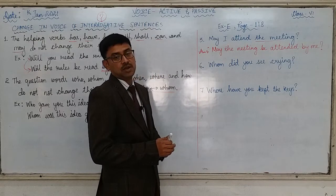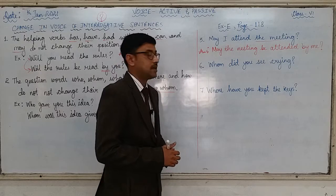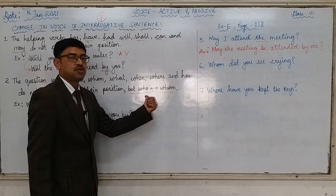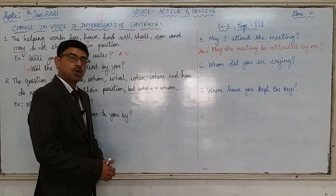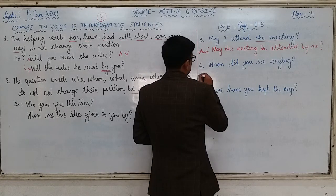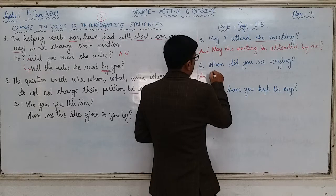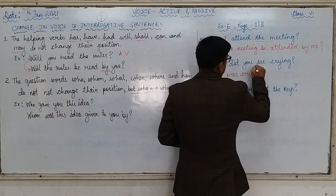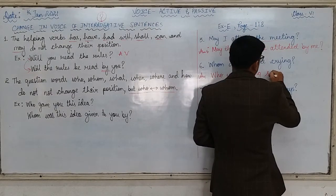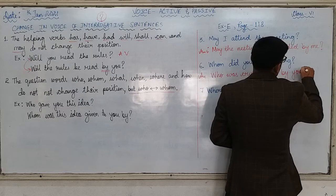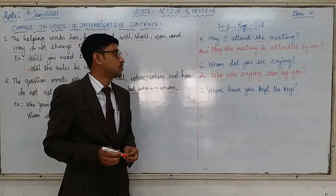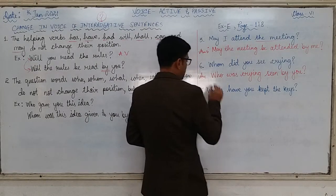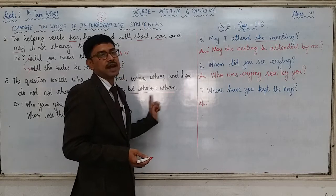Next question: 'Whom did you see crying?' We have just learned that if 'whom' is there, we have to change it to 'who', and if there is 'who', it has to be changed to 'whom'. So here 'whom' is present, and you will have to write: 'Who was seen crying by you?' The position does not change and 'where' does not fall under the category of who or whom.